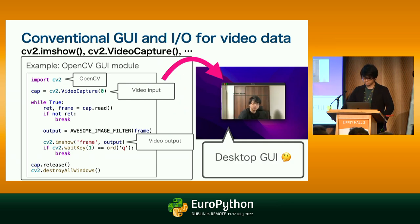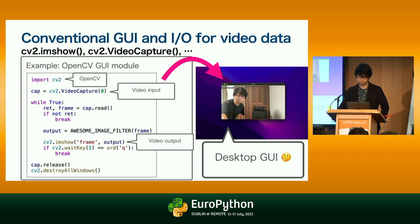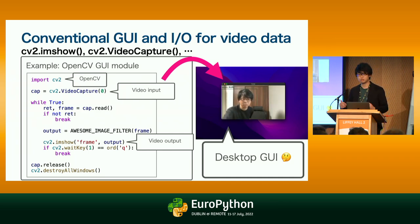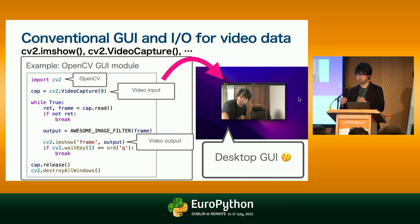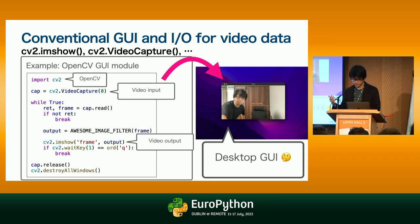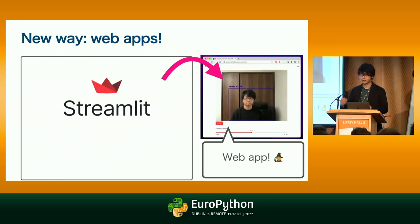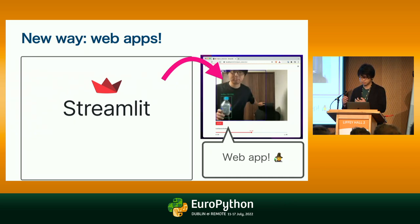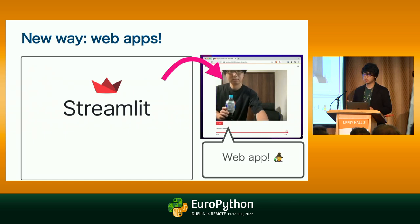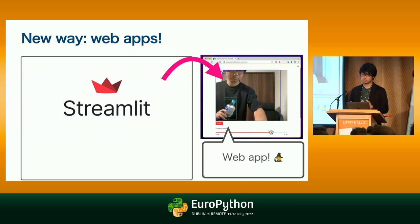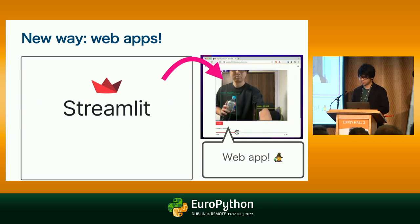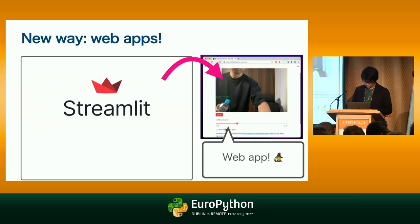We know that we can create desktop GUI-based applications using OpenCV or similar libraries. Although this approach has some limitations — for example, we cannot easily share such applications with users because desktop GUI-based applications can only run on a local environment where you have already installed the necessary packages or set up the necessary environments. In this talk, I would like to introduce a brand new way to create shareable, easy-to-use web-based user interfaces or web applications on top of computer vision or machine learning models using the Python web framework Streamlit.